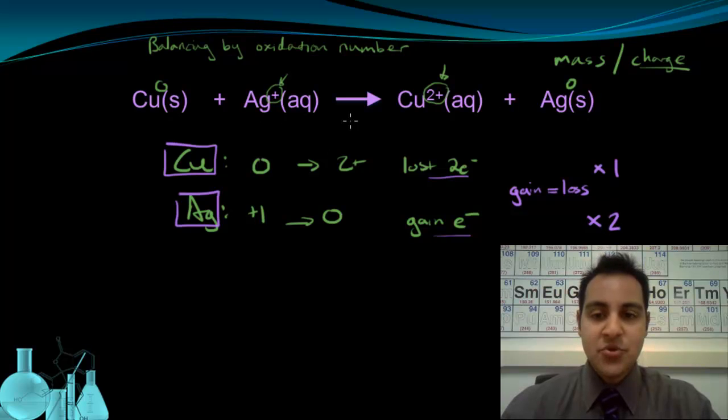But how do I actually use the times one and times two? Well, if I go to the actual reaction, everywhere copper shows up, I give it a coefficient of one, so they just stay the same. But everywhere that silver shows up, I give it a coefficient of two.